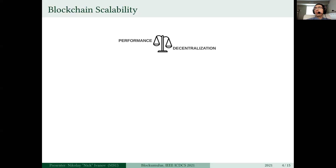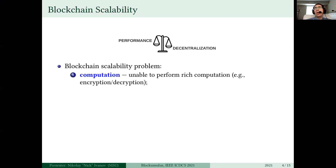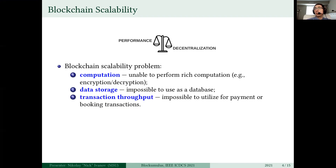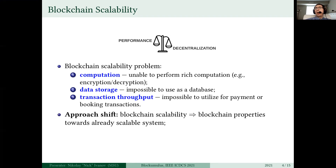Blockchain is notorious for its trade-off between performance and decentralization, which is known as the blockchain scalability problem, which manifests itself in limited computation, bounded data storage, and insufficient transaction throughput. In this work, we propose a shift of approach. Instead of delivering scalability to blockchain, as it's done in previous works, we instead are trying to port the properties of blockchain into a distributed system which is already scalable.